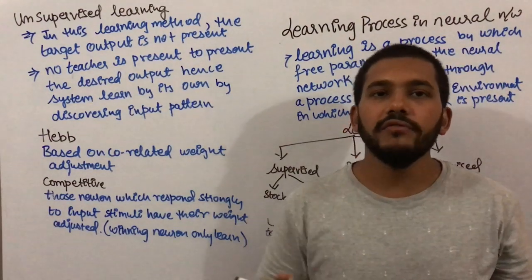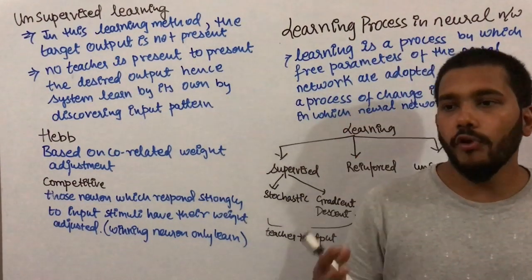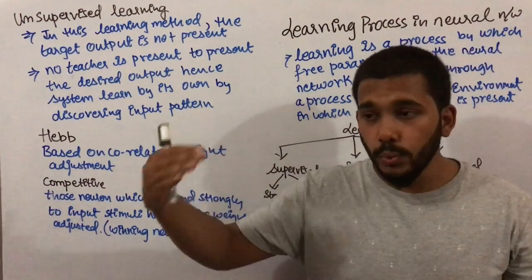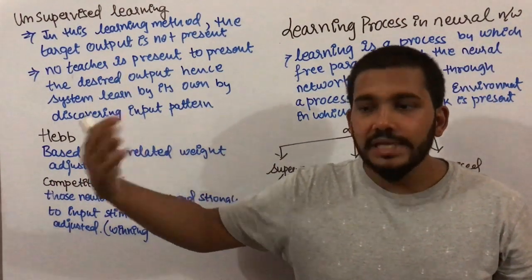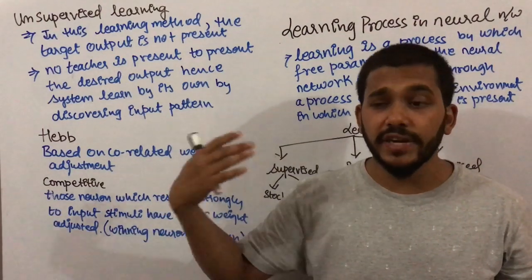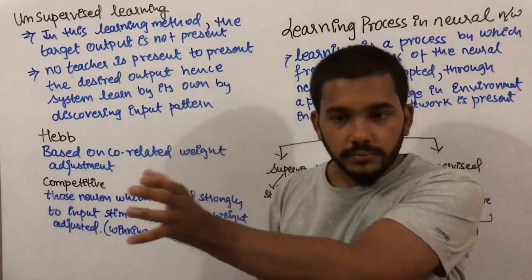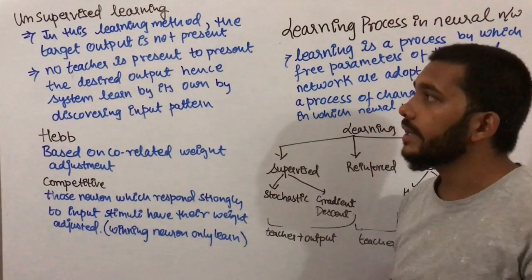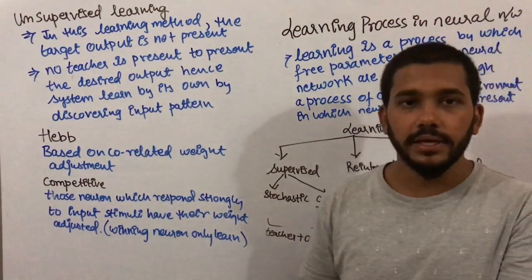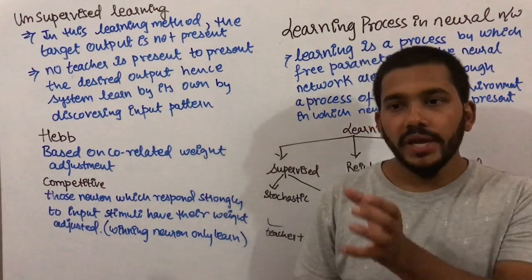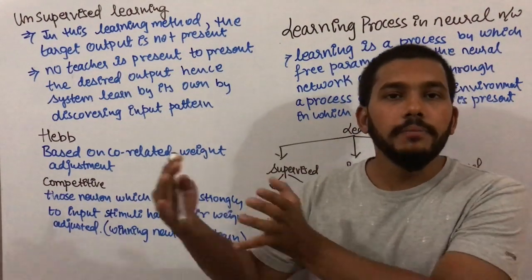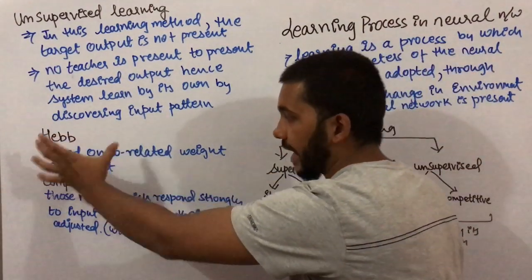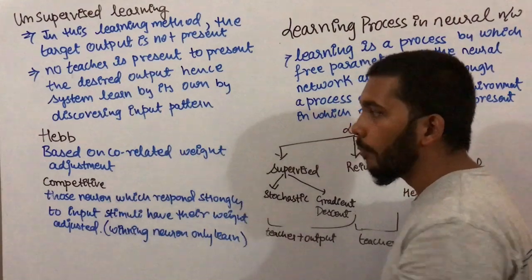This is like learning a subject when no teacher is present — we go through the syllabus, check different sources, see different patterns, and learn. In unsupervised learning, no teacher is present and the system learns on its own. Unsupervised learning is of two types: Hebbian and competitive.